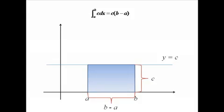that has a width of b minus a and a height of c. So the area of that rectangle is c times b minus a, which is why this definite integral is equal to c times b minus a if all we're doing is the definite integral of a constant.